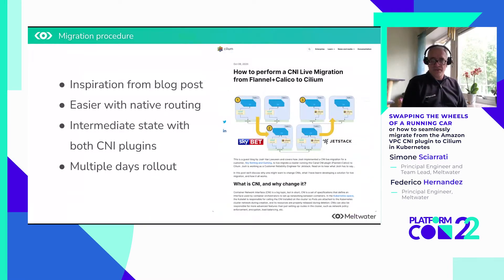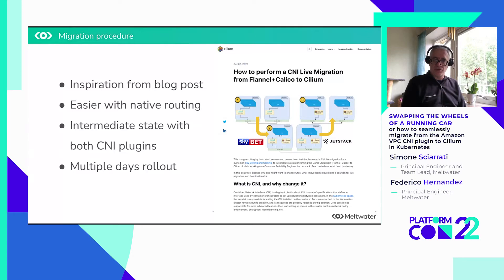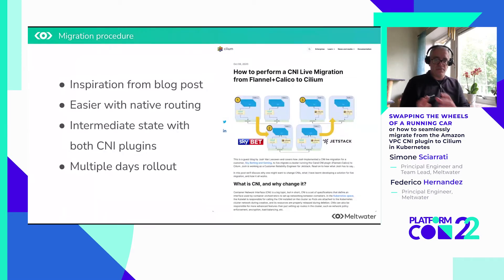So now everything was prepared. We knew how Cilium works and we could deploy Cilium outside of KOPS. We were now tackling the migration procedure — we wanted it to be seamless for users and done in place in the current cluster. We had seen other migrations before, specifically the migration from SkyBet and JetStack that migrated away from Flannel and Calico to Cilium. Inspired by that, we saw that it should be possible to migrate in place from the Amazon CNI plugin to Cilium.